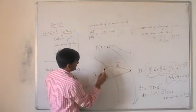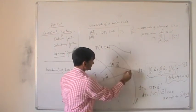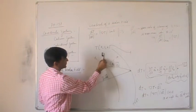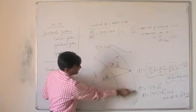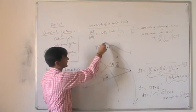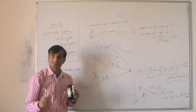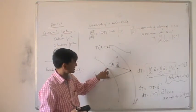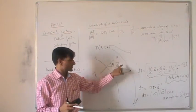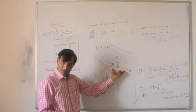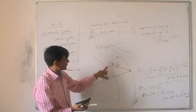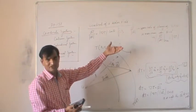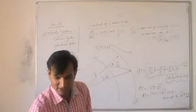When theta equals 0, dl is in the direction of the gradient, which is the shortest path between the two isothermal surfaces. Moving from this curve to that curve, the temperature change is always dT, but the path length varies. The shortest path gives the maximum rate of change of temperature. This is the physical interpretation of the gradient.